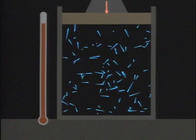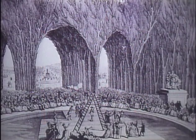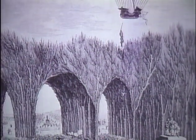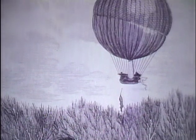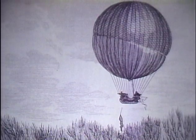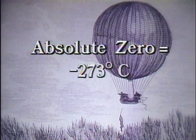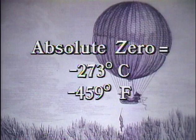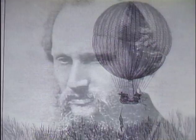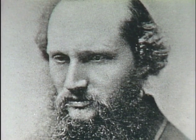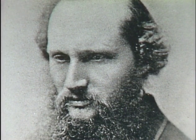This idea led to a new concept of temperature itself. It would have an absolute meaning based on the universal properties of gases. And absolute zero — the lowest possible temperature — would be the temperature at which a gas would be entirely without heat. According to Charles and Gay-Lussac, absolute zero would occur at 273 degrees below zero Celsius, or 459 degrees below zero Fahrenheit.